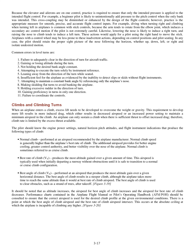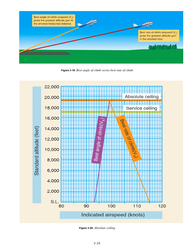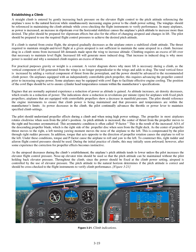There is a point at which the best angle of climb airspeed and the best rate of climb airspeed intersect. This occurs at the absolute ceiling at which the airplane is incapable of climbing any higher. Establishing a climb: a straight climb is entered by gently increasing back pressure on the elevator flight control to the pitch attitude referencing the airplane's nose to the natural horizon while simultaneously increasing engine power to the climb power setting. The wingtips should be referenced in maintaining the climb attitude while cross-checking the flight instruments to verify performance.